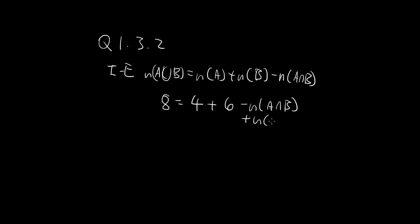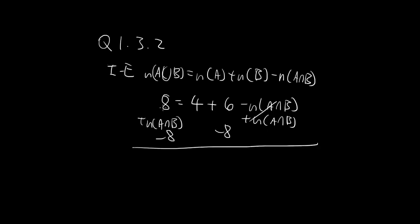So I'm going to add this over to both sides and subtract 8 from both sides — just cancel — so the number of elements in A intersect B is 4 plus 6 minus 8, which is 2.